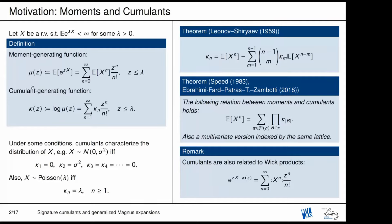You see, if you try to compute the moments, you get moments of all even orders, but here the cumulants give you just one non-trivial value — so it's much simpler. For the Poisson distribution, you also get a similar description: the cumulants are all equal to lambda, the parameter.